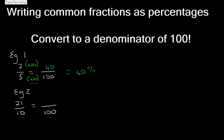Now let's look at the following example. We have 21 over 10. We've got to convert to a denominator of 100. What did we do to 10 to get 100? We multiplied by 10. That means we need to multiply the numerator by 10 as well. 21 times 10 is equal to 210, and that gives us 210%.